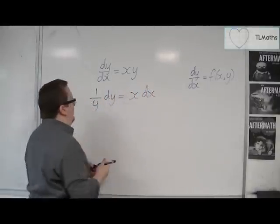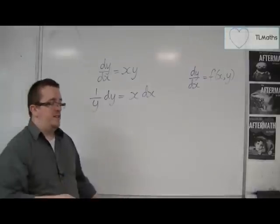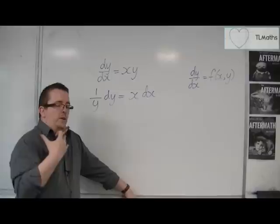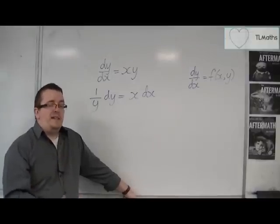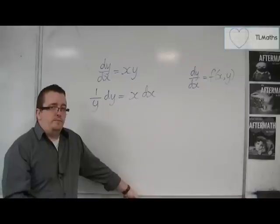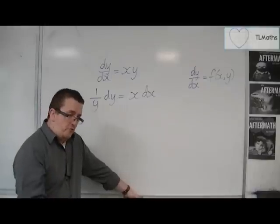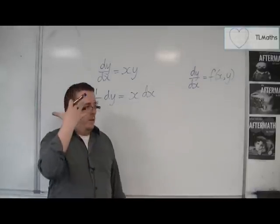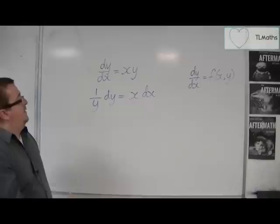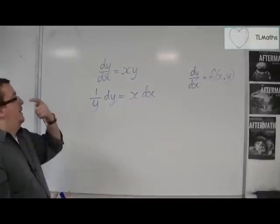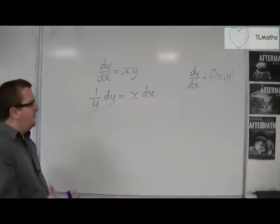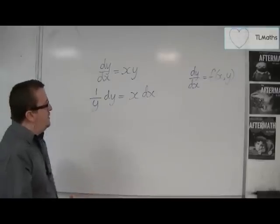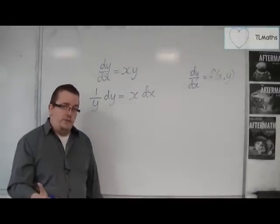Now, this isn't a particularly good thing to do, because throughout all the way through A-level maths, you've been told that dy by dx isn't a fraction. It's not a fraction, it's a limit. And time and time again, we break this rule in order to get the mathematics to work. And this is another example. So I've kind of split up the dy by dx by multiplying both sides by the dx.